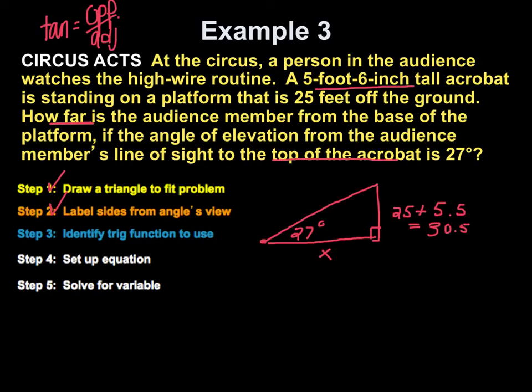And in this problem, I'll have the tangent of 27. So, the tangent of 27, that's my angle, is equal to the opposite side, which is, in this case, that combo of 30.5 over the adjacent side, which is x. Okay, and we'll solve this. So, I identified, I did my setup.